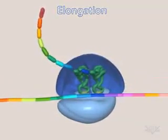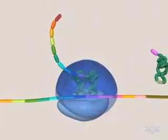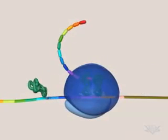As elongation continues, the growing peptide is continually transferred to the A-site tRNA, the ribosome moves along the mRNA, and new tRNAs enter.